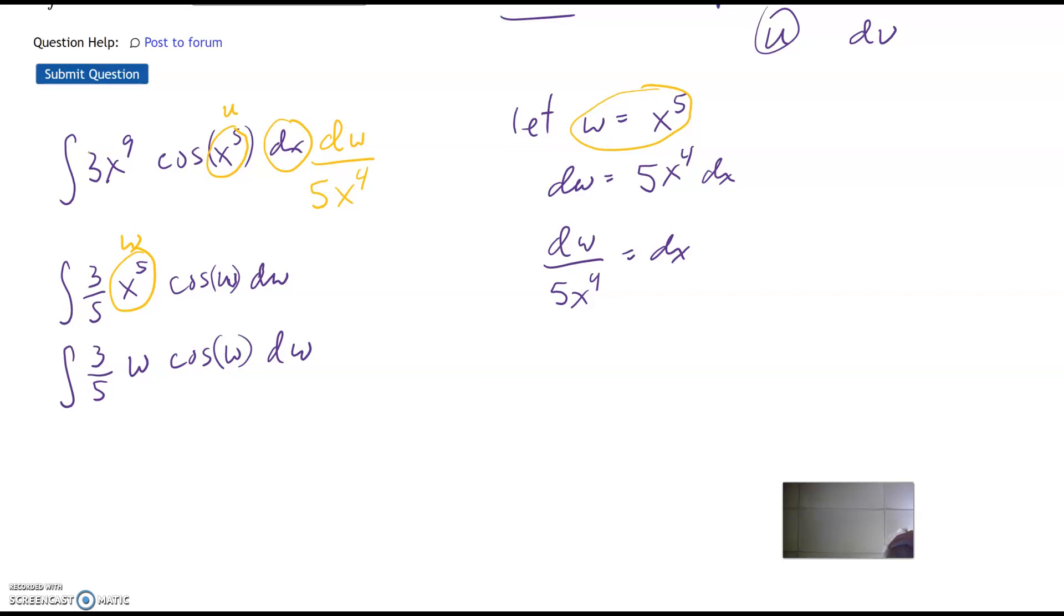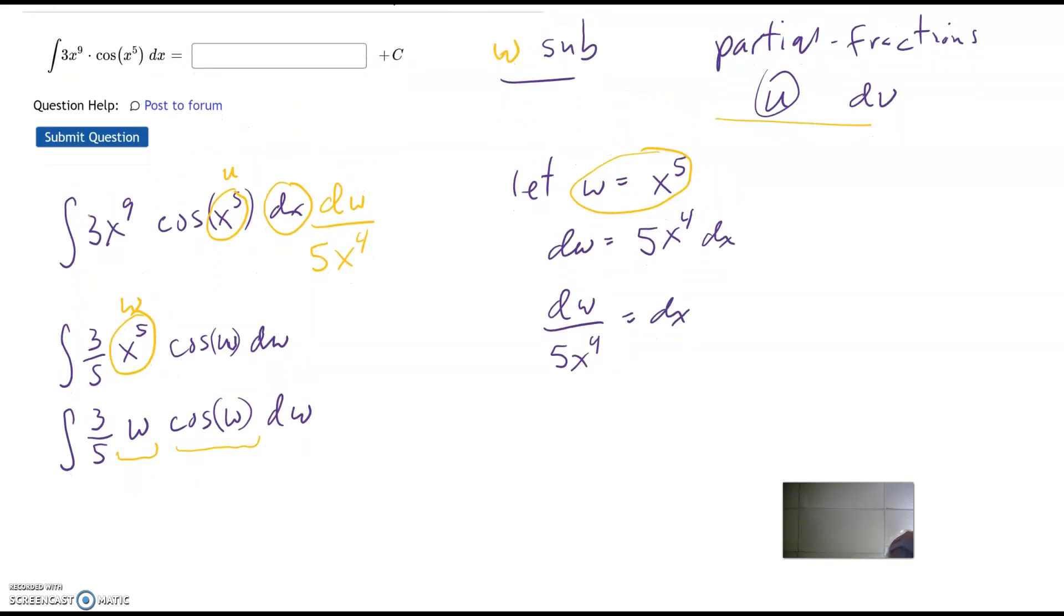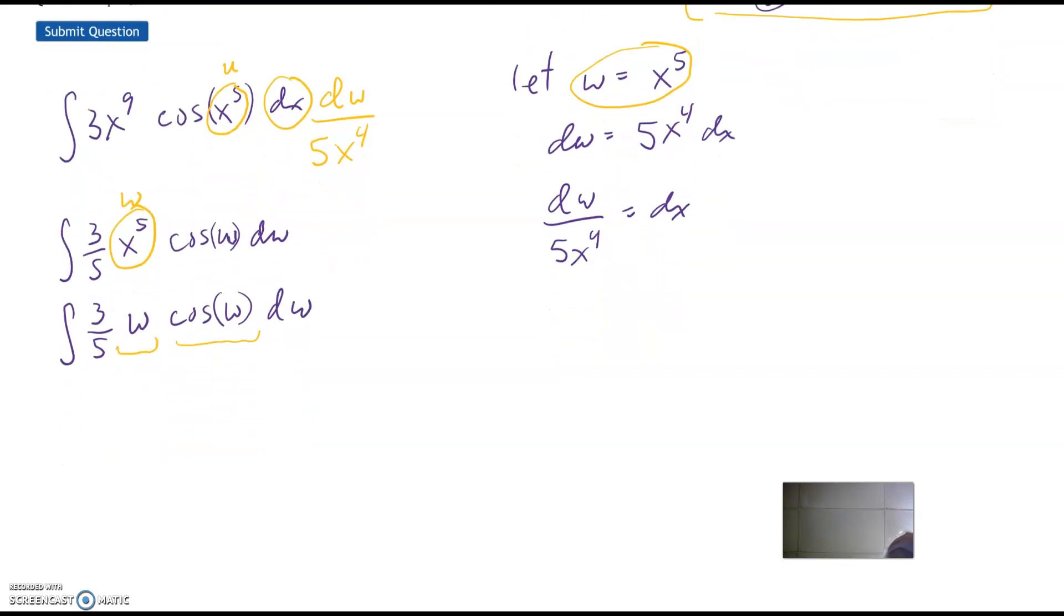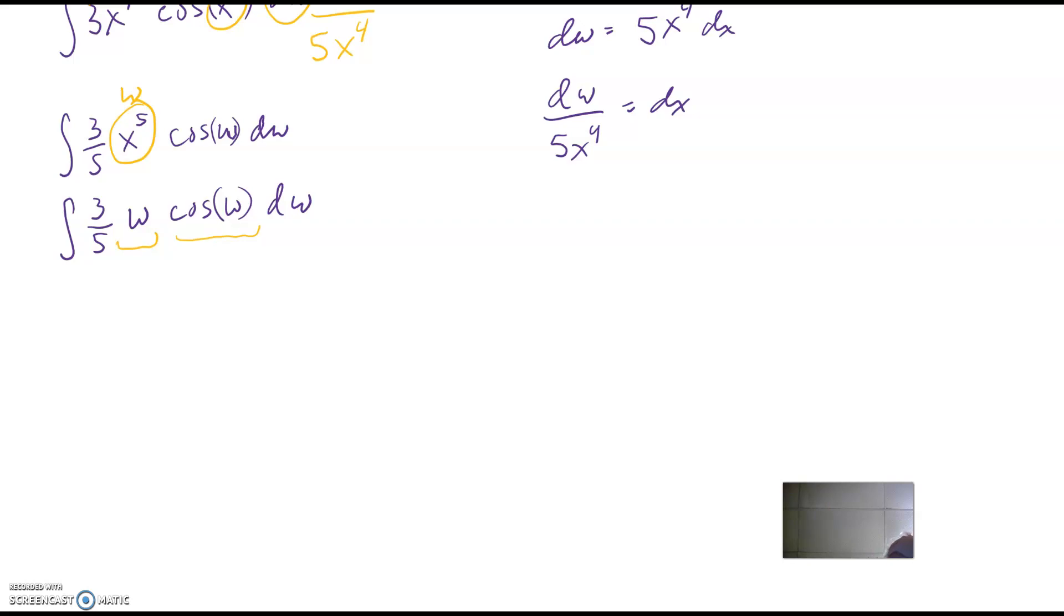All right, now if you're wondering, if this hadn't been x to the fifth, if this had been like x to the seventh or something, then that w substitution wouldn't be quite so clean. But you still might be able to figure something out. Anyways, let's move on. So now I've got a function w, and I've got a function cosine w. So now it's time to do partial fractions. And here I can just use regular u and regular v. All right, so let's see here. Sometimes there's a little bit of trial and error involved, but algebraic, if you remember, liates.